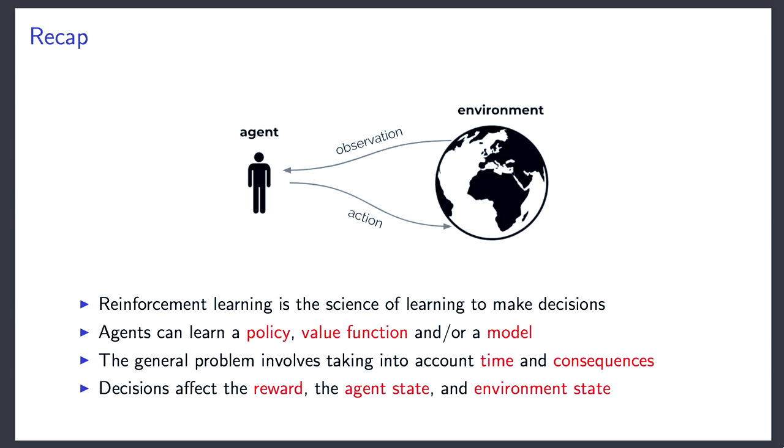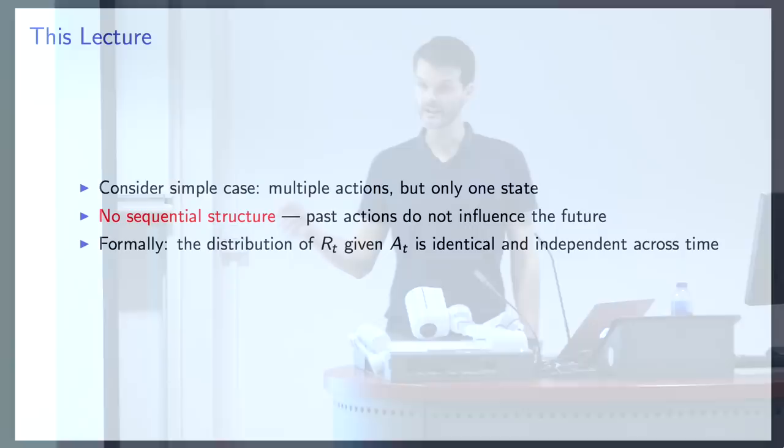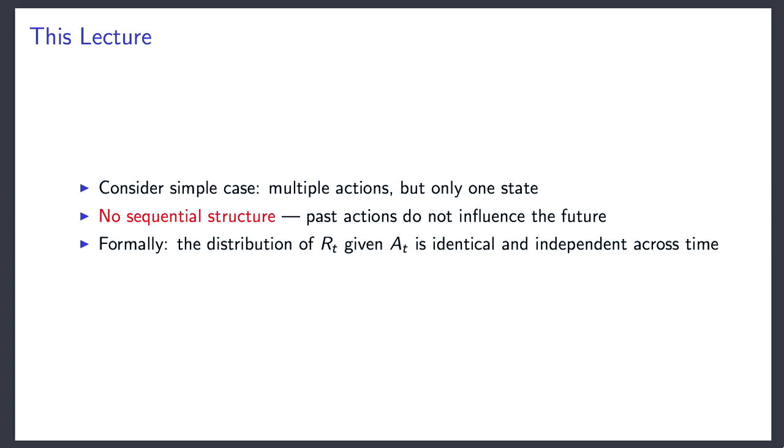In this lecture, we're going to simplify things, because in the simpler setting we can already meaningfully talk about exploration and exploitation. We're going to take away the sequential structure, which means that past actions will no longer influence the future state of the environment. You'll have the opportunity to interact with the problem again and again without changing it. The distribution of rewards will be identical for a given action across time, and you can query the system again and again without changing that reward distribution.